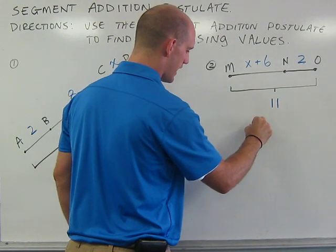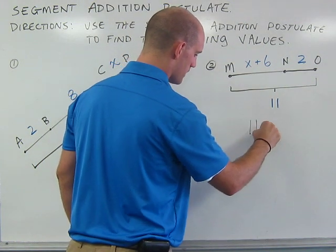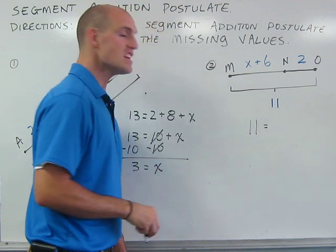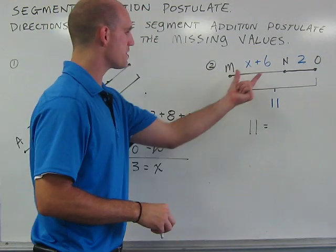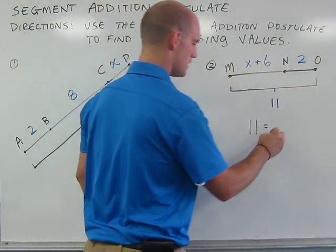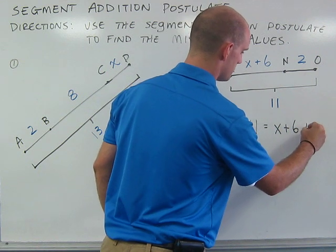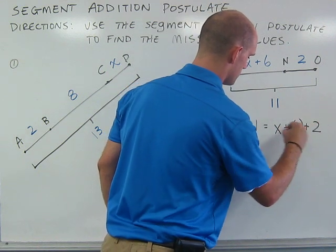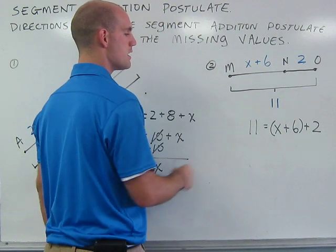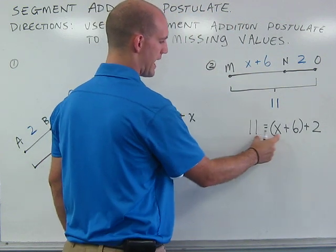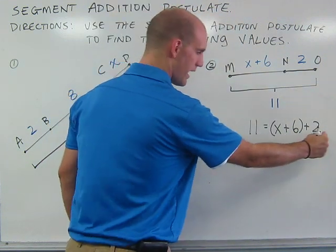So, the sum of the entire thing, 11, is equal to the sum of each individual piece. To find the whole thing, 11, I add up X plus 6 and 2.